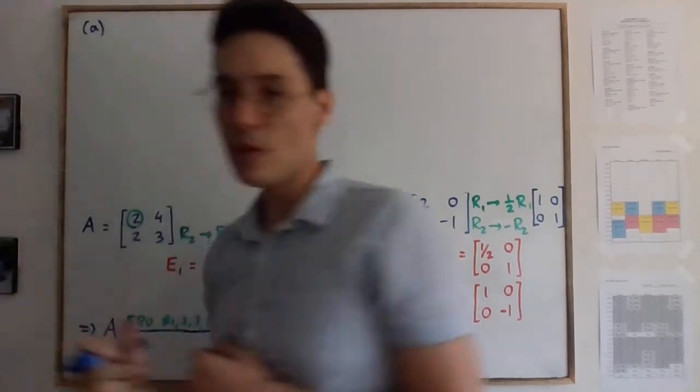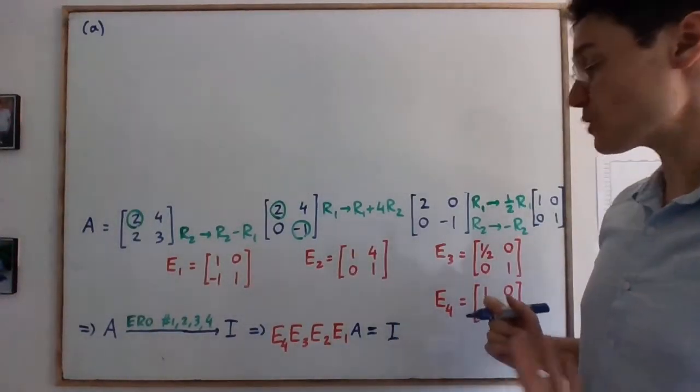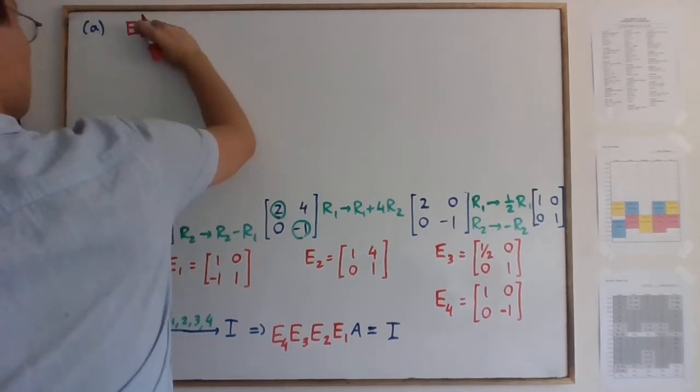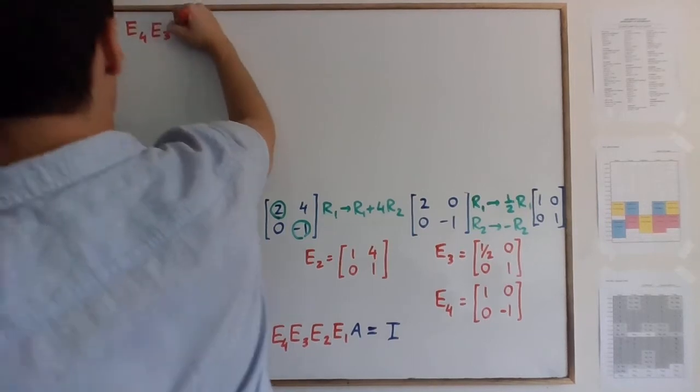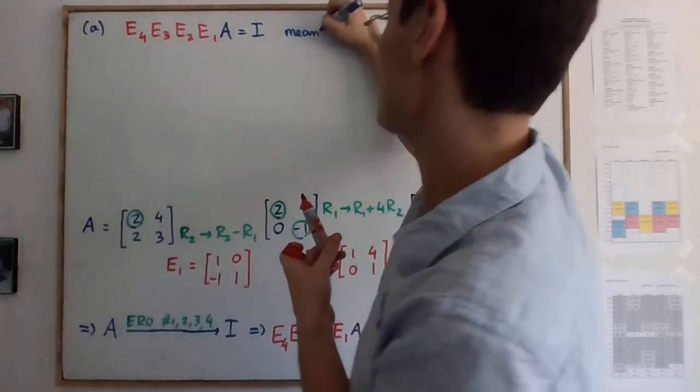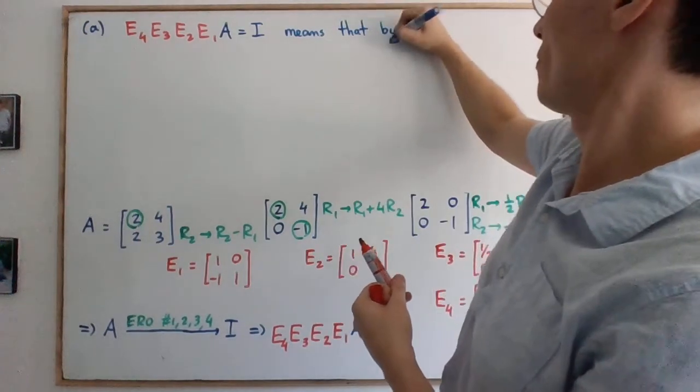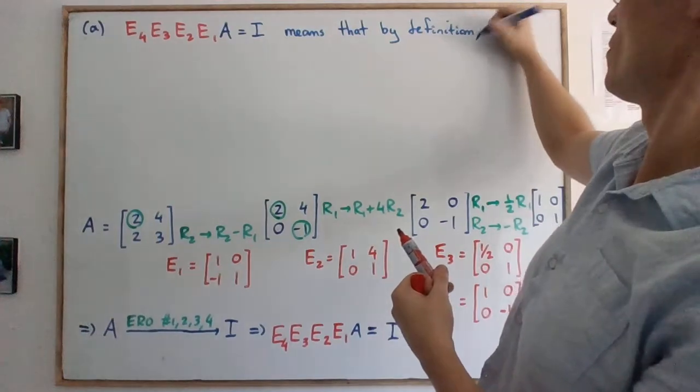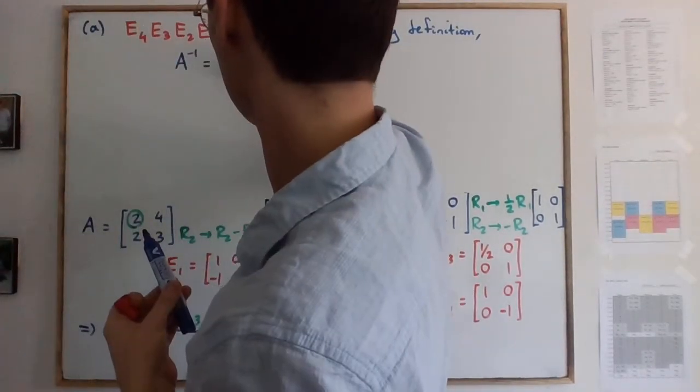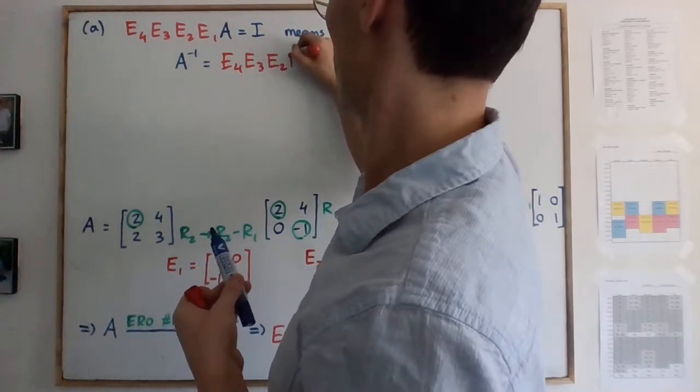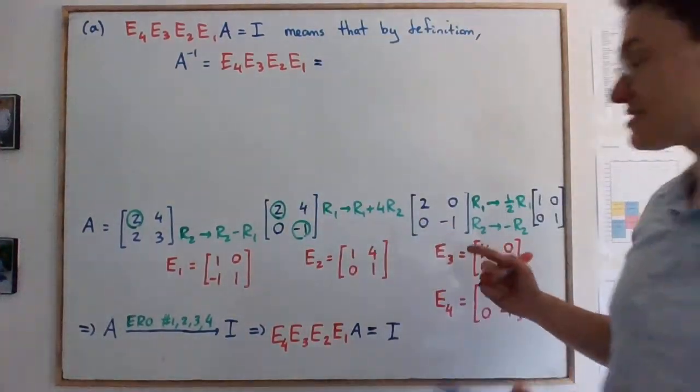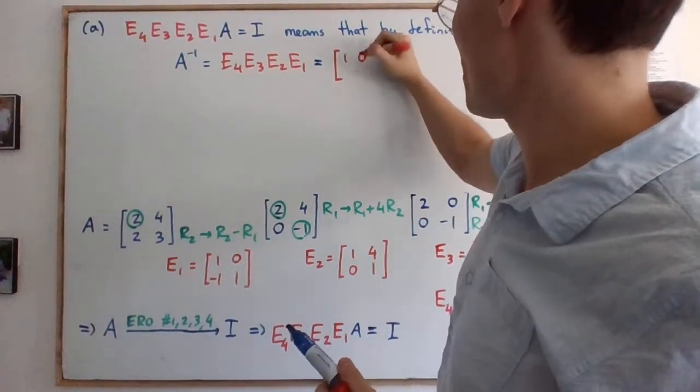Okay. So to answer letter A. Remember that for letter A, we were looking at the inverse. And the inverse, we have it already by definition. Okay. So let's just recopy this line to talk about it. E4, E3, E2, E1 and A equals to I means that by definition, the inverse is actually equal to that. And now we can basically write down the answer. Be careful of the order, right? So 1, 0, 0, negative 1.